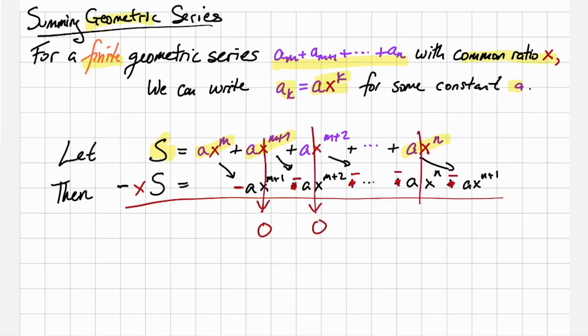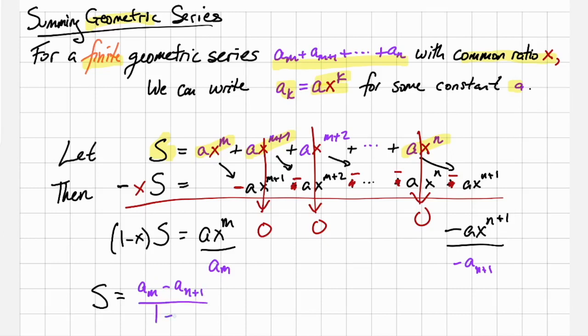And so when we add these together, all the terms in the middle add to zero, and what we're left with is (1 - x) times S is equal to ax to the m minus a times x to the n plus one. And so if we solve for S, we'll see that S is equal to a sub m minus a sub n plus one divided by one minus x.